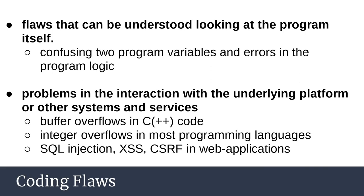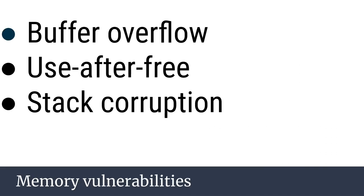When we are developing, we can introduce flaws in our application in two types. One involves flaws in the program itself — errors in programming logic. The other involves problems in the interaction with the platform or other services and systems that interact with the application. At this point we can detect problems like buffer overflow, and specific web application vulnerabilities like SQL injection and cross-site scripting. Terms like buffer overflow, use-after-free, and heap corruption are related to memory flaws.